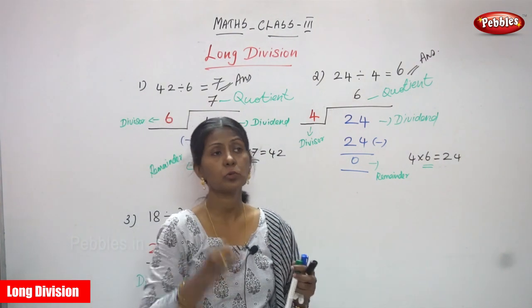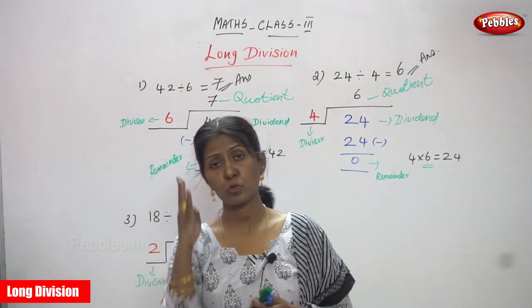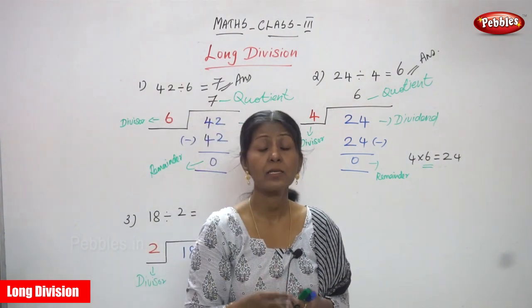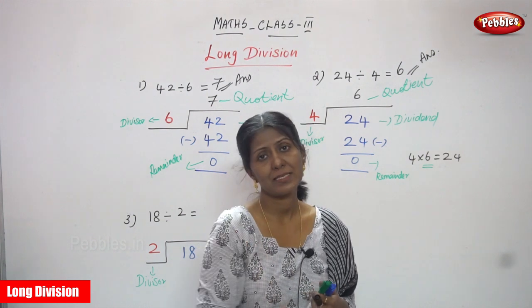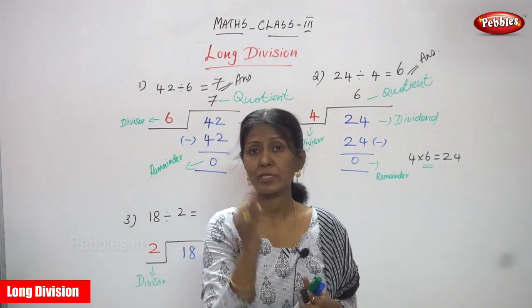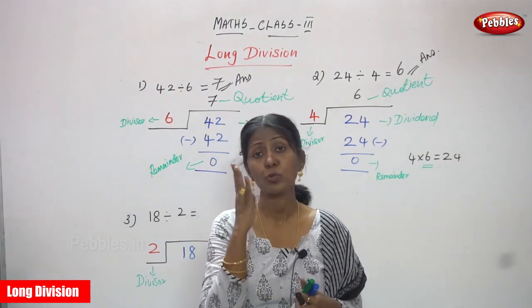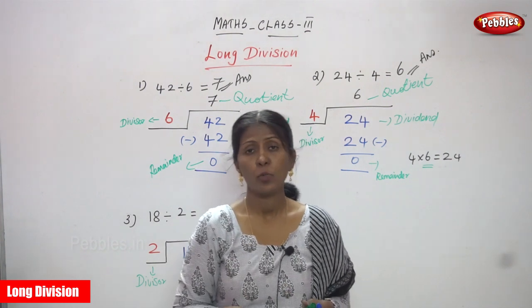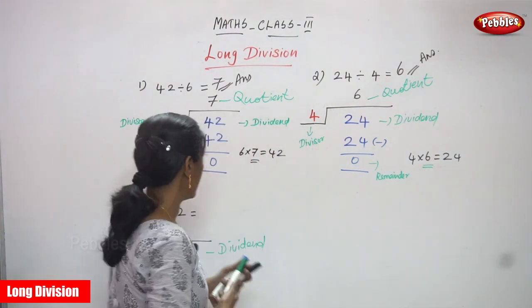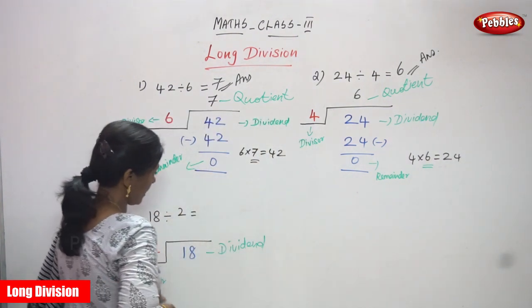So 2 1s are 2. 2 2s are 4. And 2 3s are 6. 2 4s are 8. 2 5s are 10. 2 6s are 12. 2 7s are 14. 2 8s are 16. And 2 9s are 18.